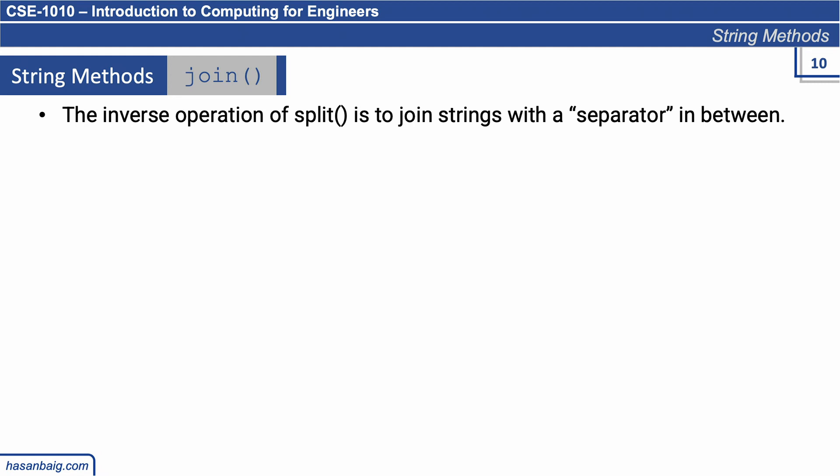The output of the split method is a list containing all the tokens or substrings that are extracted around the separator. With join method, which is exactly the inverse, the input would be a list and the output would be a string. It would concatenate all the elements in the list with the help of the separator in between.